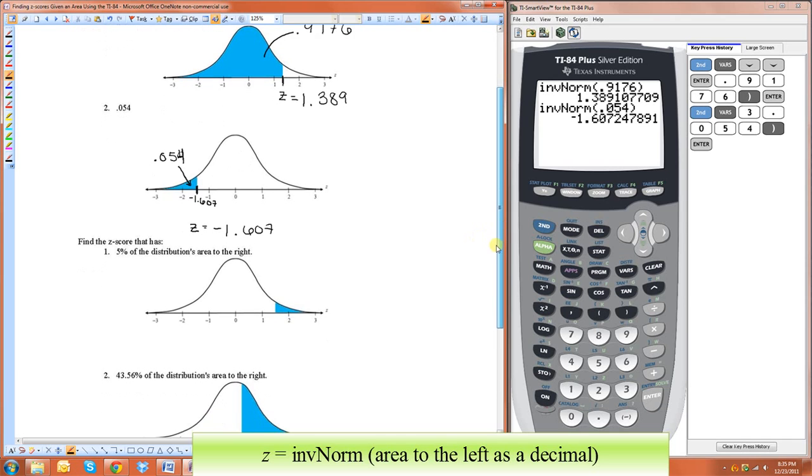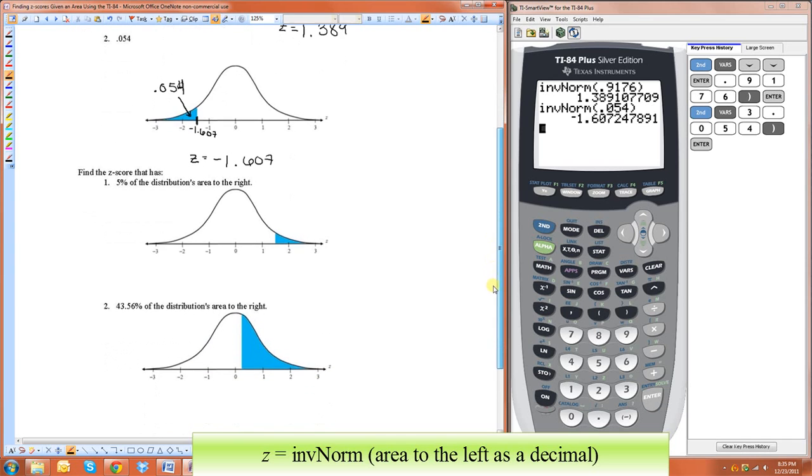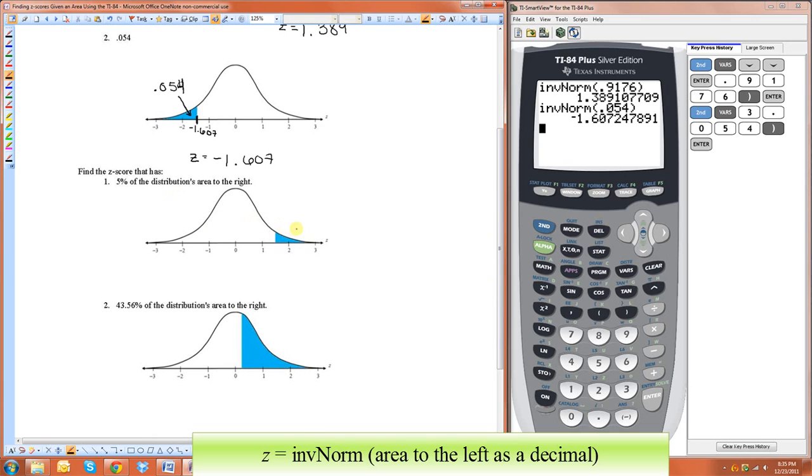So the ones that are a little more difficult are when we want to know, when we only know the area to the right. And it's really not significantly more difficult. So this one is saying that 5% of the distribution's area is to the right. So that means that this area right here is 0.05.